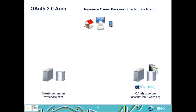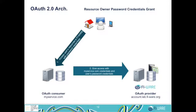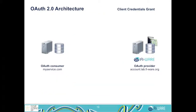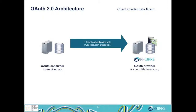The next scenario is the resource owner password credentials grant. Its main difference is that the user doesn't use a web browser to access the OAuth consumer, so the user will send his FIWARE credentials directly to the OAuth consumer. In this case, the user should trust the OAuth consumer because it will use his private credentials to retrieve the access token from the OAuth provider, after which it will use the access token as usual. The fourth scenario is called the client credentials grant because there are no users. Here, the OAuth consumer authenticates itself to access its own resources. Once its own credentials are sent to the OAuth provider, it answers with the access token, and the consumer uses it to access its resources.